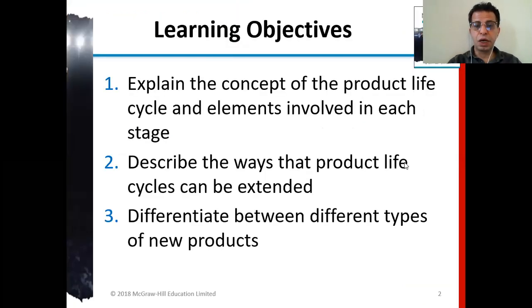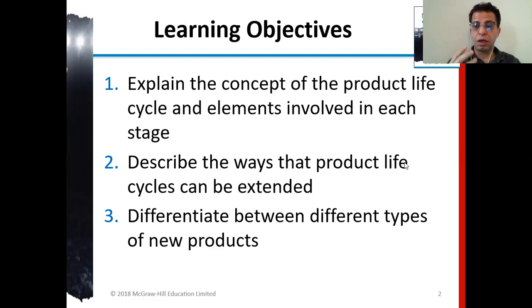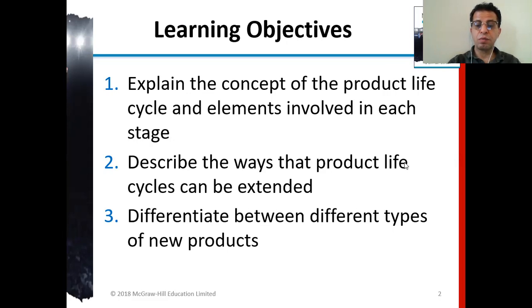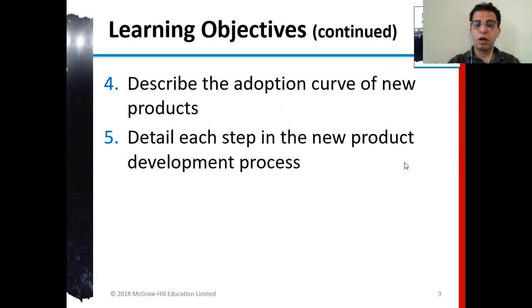The learning objectives for this chapter include: explaining the concept of the product life cycle and the elements involved in each stage — early, mid, and decline. We'll also describe ways the product life cycle can be extended, differentiate between different types of new products, describe the adoption curve of new products, and detail each step in the new product development process.